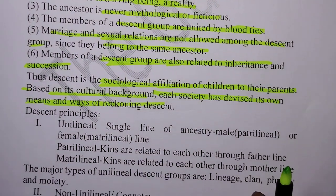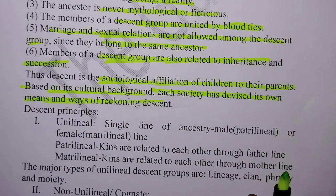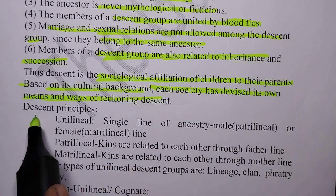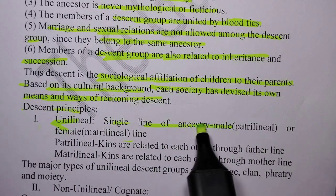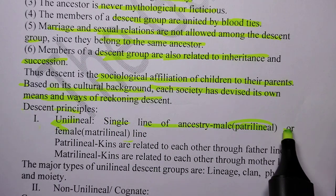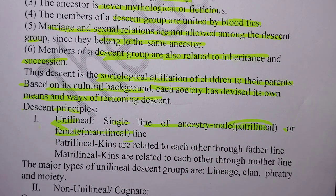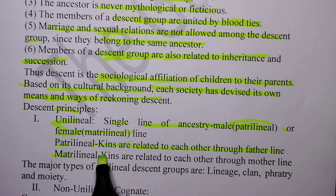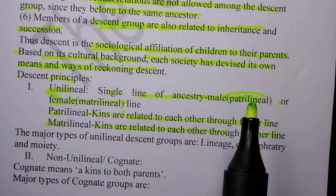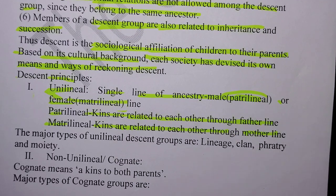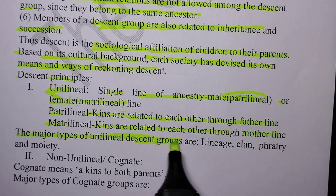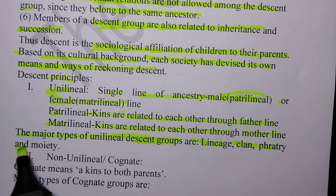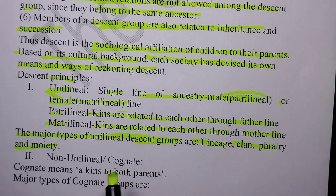Now let us study the descent principles. Unilineal descent follows a single line of ancestry — either male (patrilineal) or female (matrilineal). Patrilineal kins are related to each other through the father's line, and matrilineal kins through the mother's line. The major types of unilineal descent groups are lineage, clan, and moiety. Non-unilineal or cognate descent means a kin of both parents.